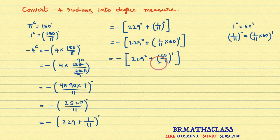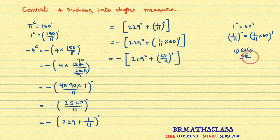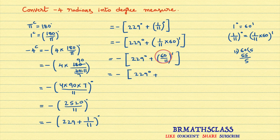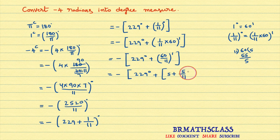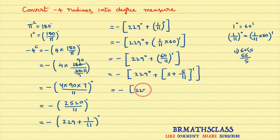Now I need to convert 60 divided by 11 minutes further. Dividing 60 by 11: 5 times 11 is 55, and 60 minus 55 is 5. So 60 divided by 11 gives quotient 5 and remainder 5, which can be written as 5 minutes plus 5 by 11 minutes.